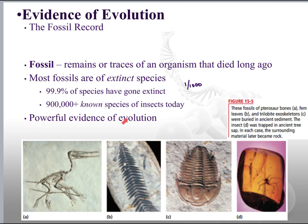So this is some pretty powerful evidence of evolution. You've got some fern leaves, a trilobite, and what looks like a spider encased in amber — so not fossilized in rock, but fossilized in amber. There are different types of fossils, and we'll see how these things are useful.